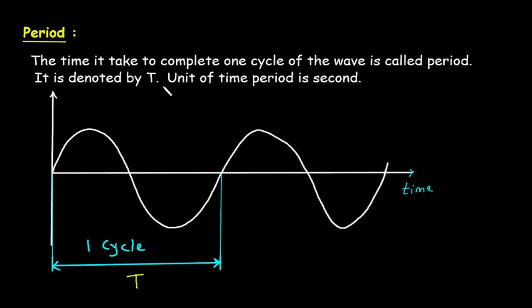Question: Define the period of alternating current. The time it takes to complete one cycle of the wave is called period. It is denoted by capital T. Unit of time period is second.